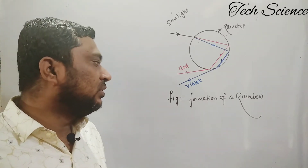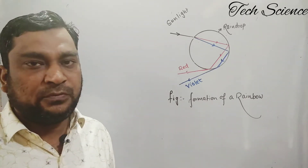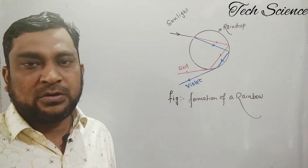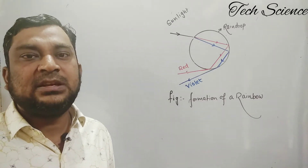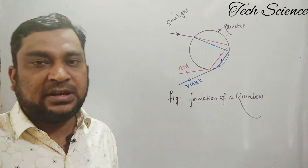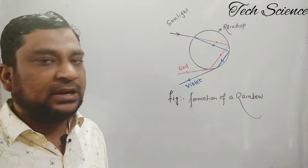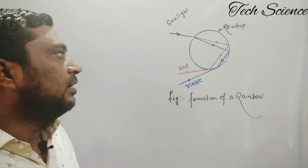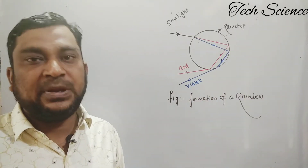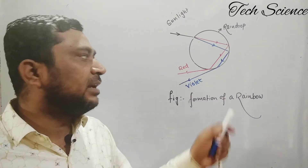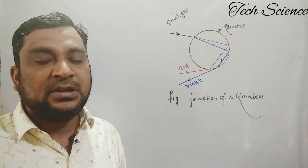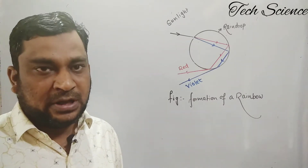Now let's start with the formation of rainbow. To understand it, consider this scenario: after raining, a number of water droplets are present in the atmosphere, sunlight is there, and an observer is present. The raindrop acts like a prism. When sunlight enters into the raindrop, three phenomena occur.